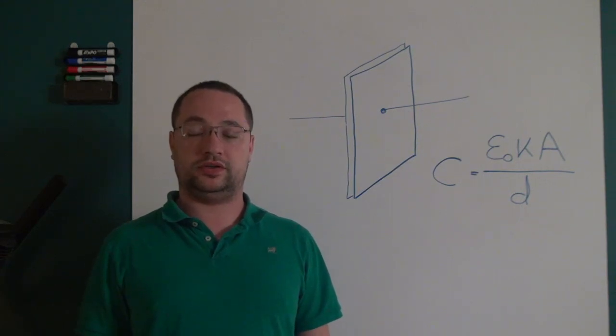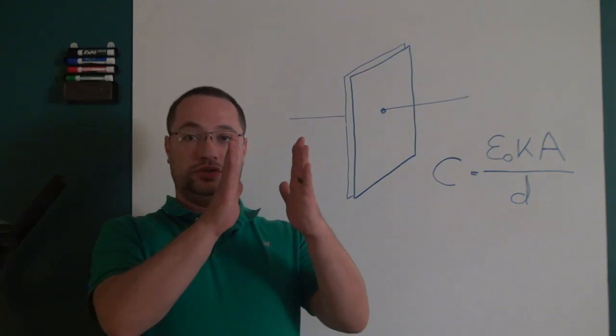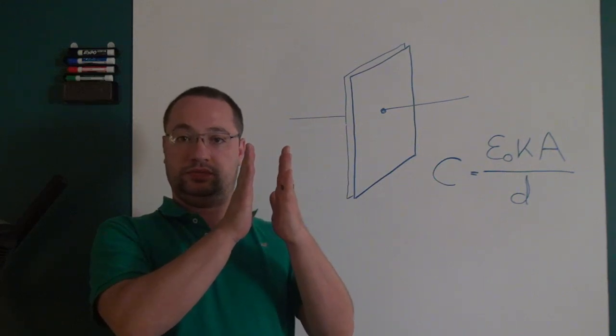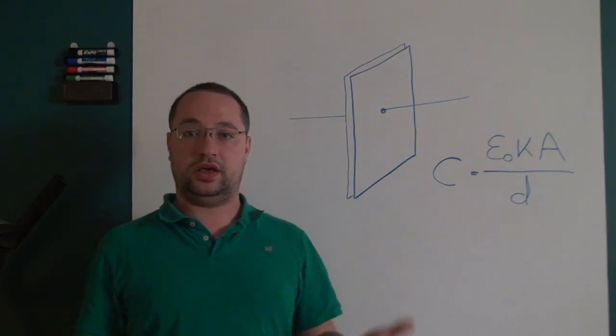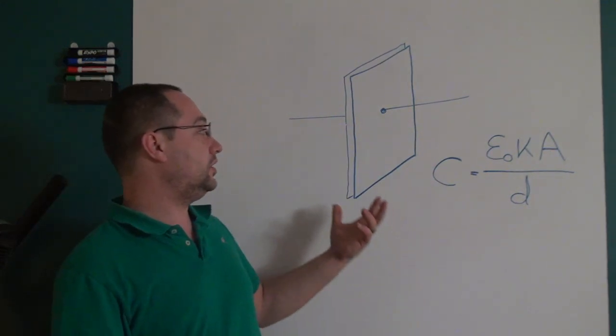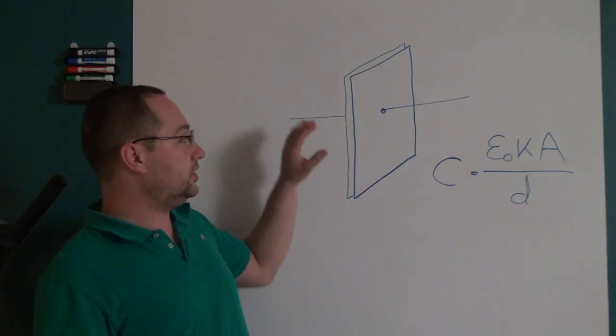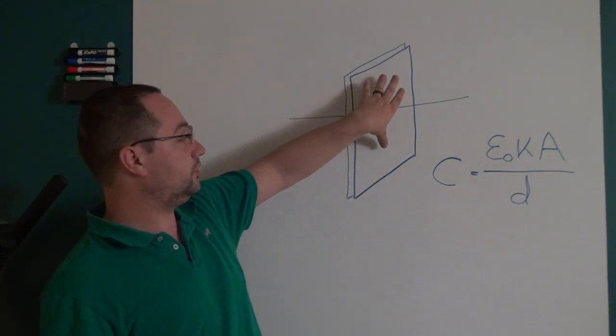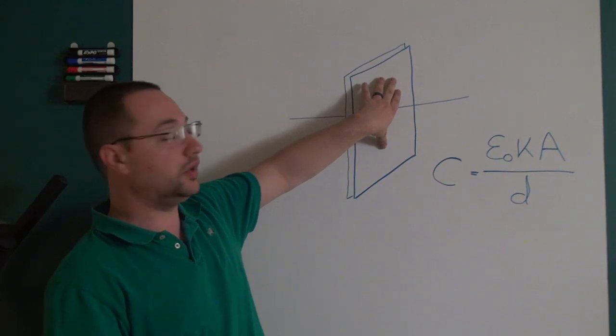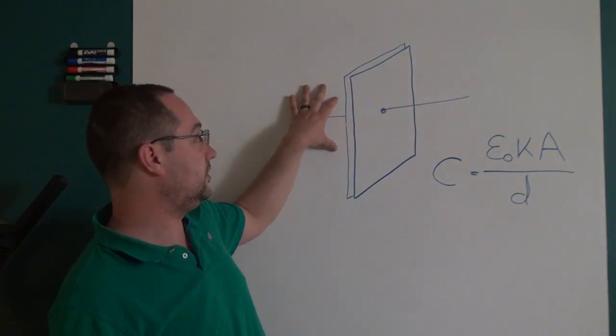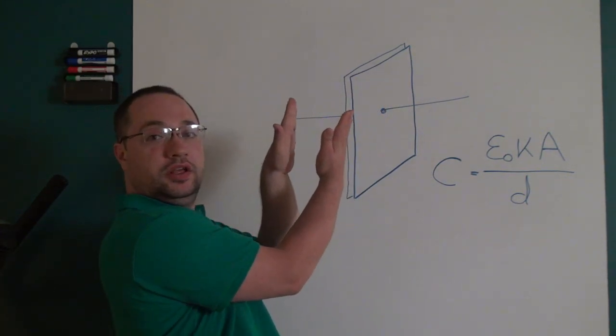And what is a capacitor? A capacitor is two conductive plates sitting next to each other and that's really it and that's what I've drawn here. It's kind of in perspective where you have the right plate and then the left plate and they are sitting next to each other.